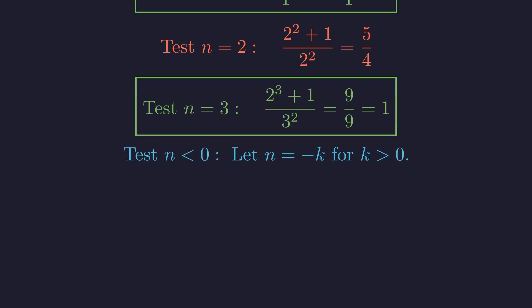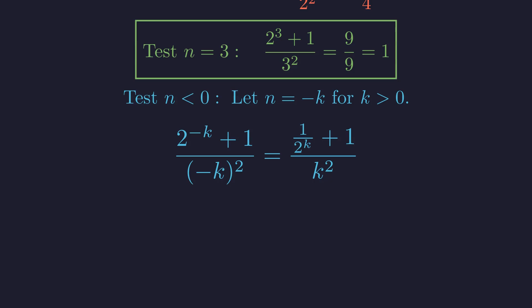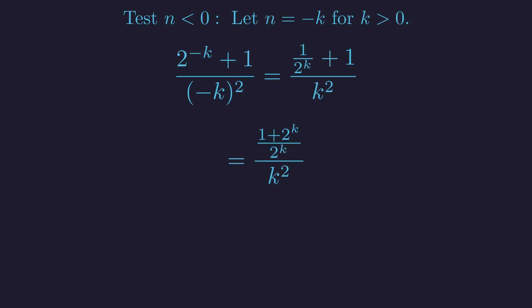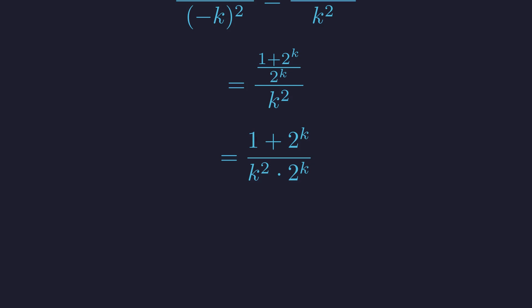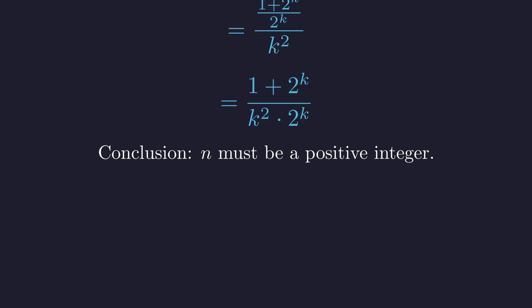What about negative integers? Let's represent n as negative k, where k is a positive integer. We evaluate the terms: 2 to the negative k becomes 1 over 2 to the k, and negative k squared becomes k squared. Next, we find a common denominator in the numerator of the complex fraction. Finally, simplifying the fraction gives us 1 plus 2 to the k all over k squared times 2 to the k. This key insight simplifies our search. We only need to consider positive integers.